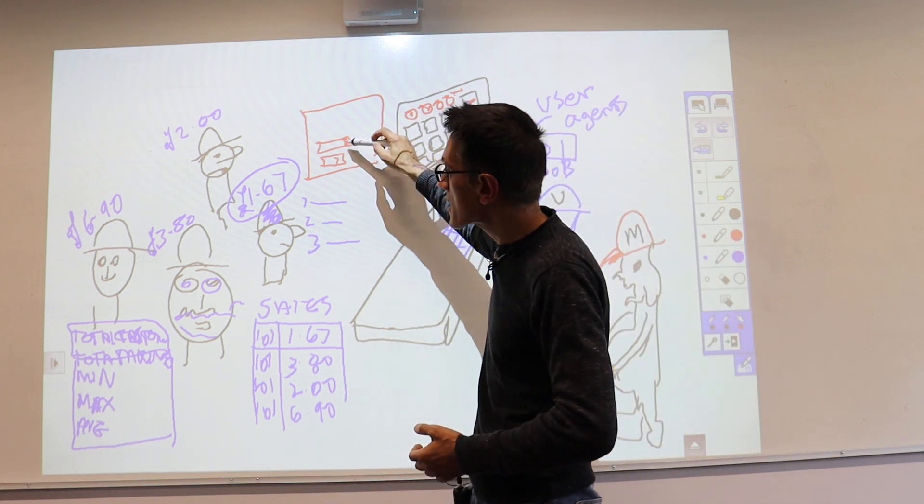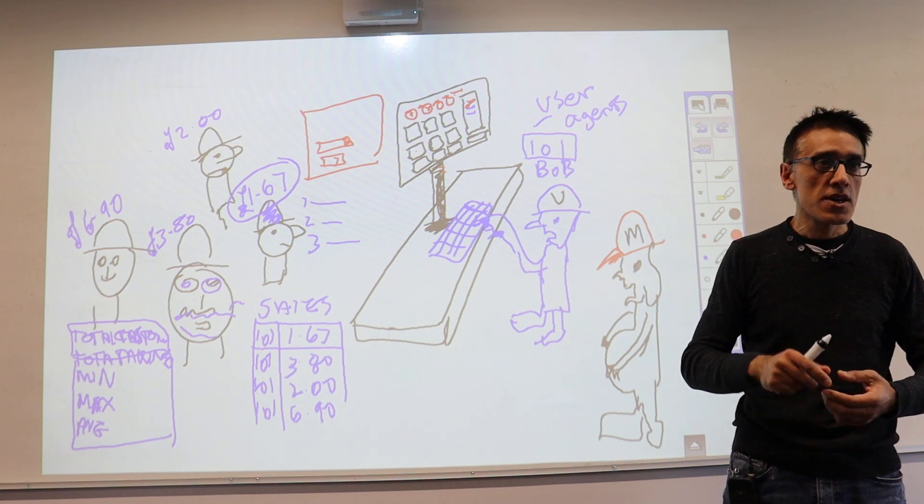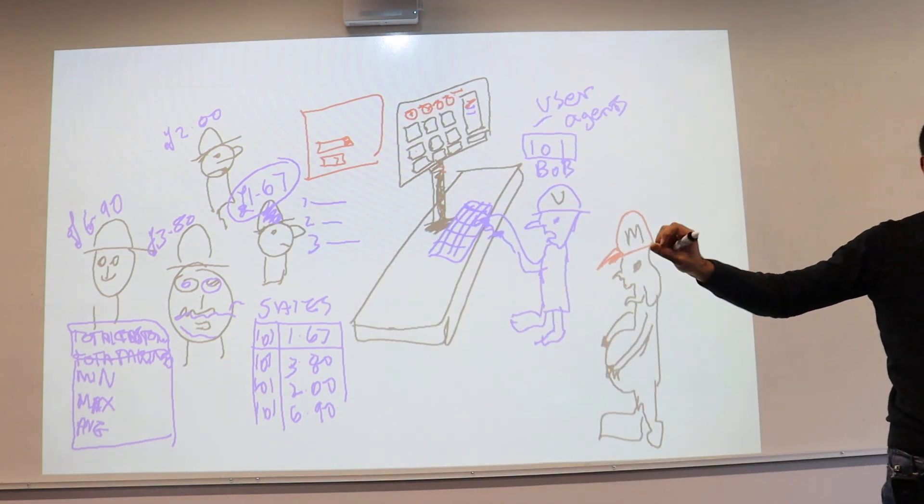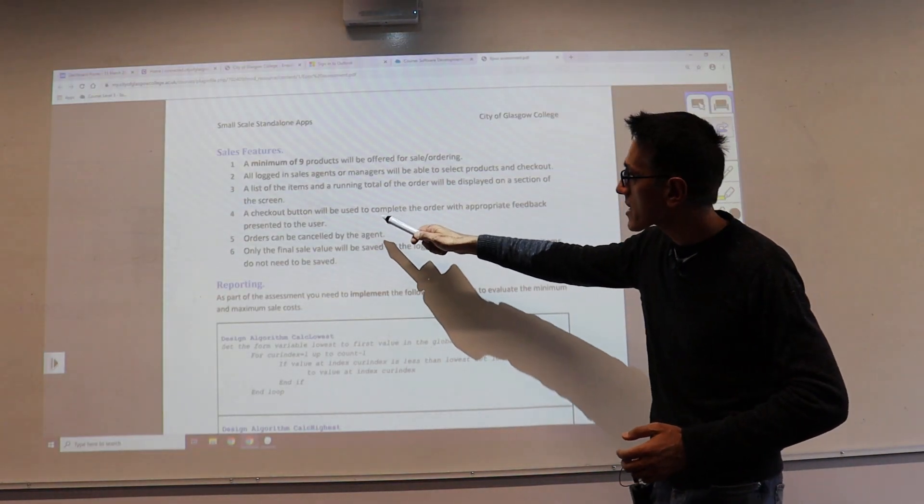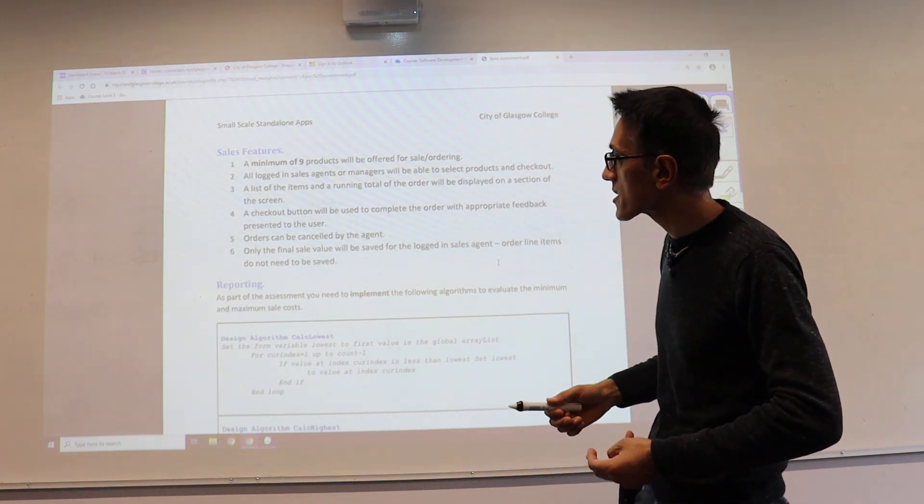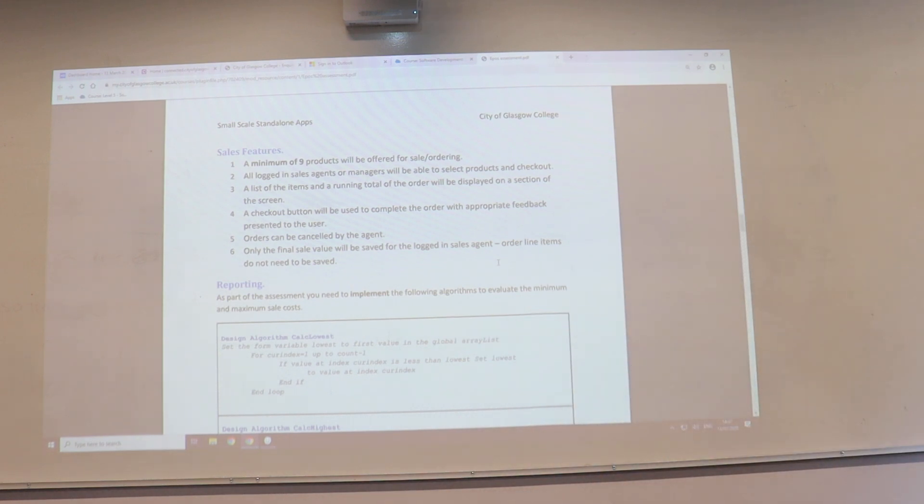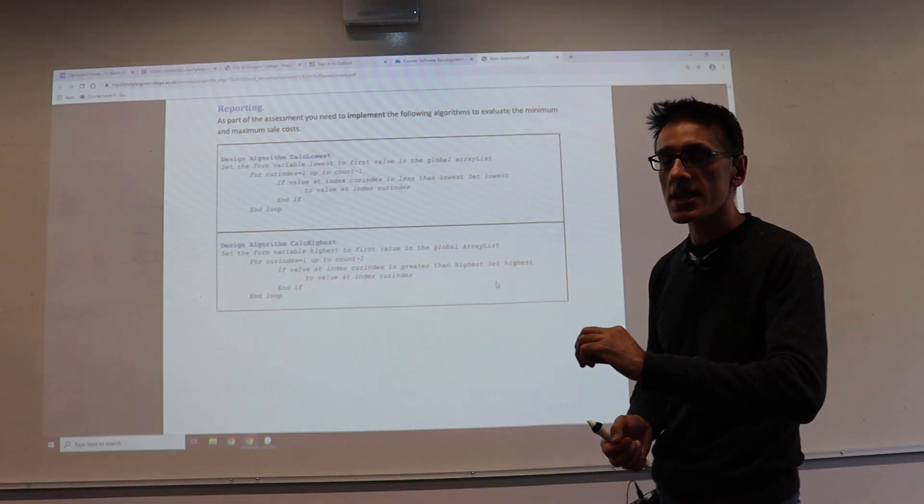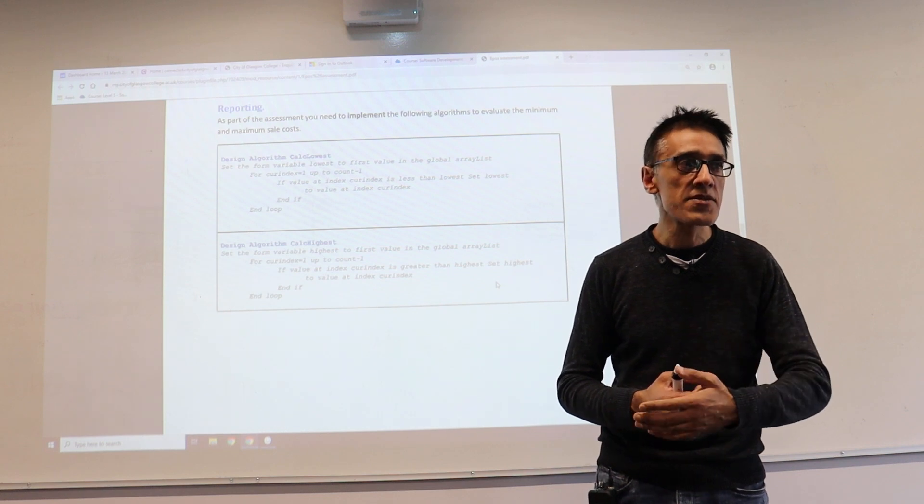If it was a drop-down combo box, you would choose the product from the drop-down, enter the quantities, add to shopping cart. Once it's all added in, there should be an option to check out. The checkout is the bit that transacts and places that transaction into the database. Check out to cancel. List of items, running total of the order—that individual customer has got to be on the screen. You're allowed to cancel orders. Only the final sale gets saved to the database.